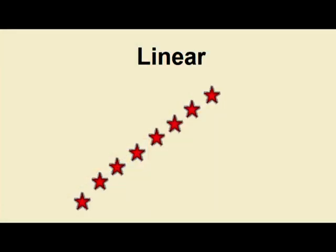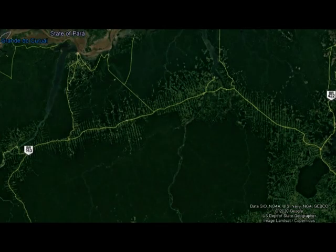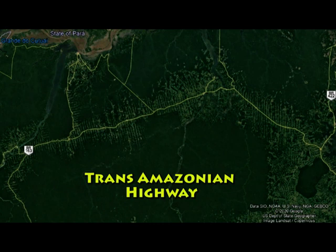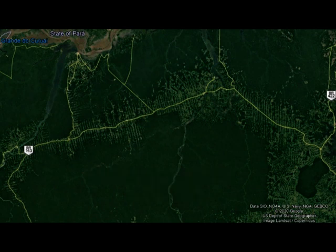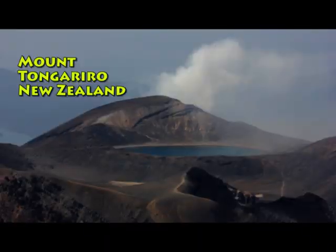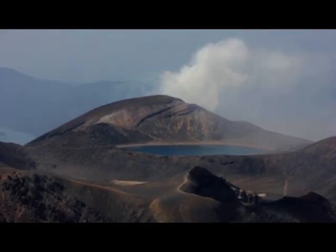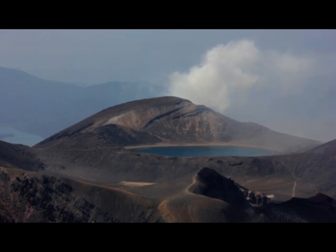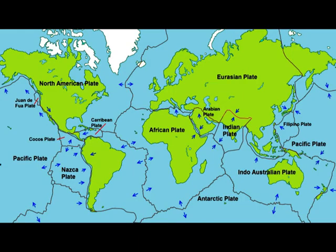Linear patterns are where features are arranged in a line. In the cultural environment there is often a linear pattern of development that follows main highways — for example, deforestation in close proximity to the Trans-Amazonian Highway in Brazil. Sometimes there are natural linear patterns too, such as the Pacific Ring of Fire — a line of earthquakes and volcanic eruptions around the Pacific Rim, which exists because earthquakes and volcanoes are associated with tectonic plate boundaries.